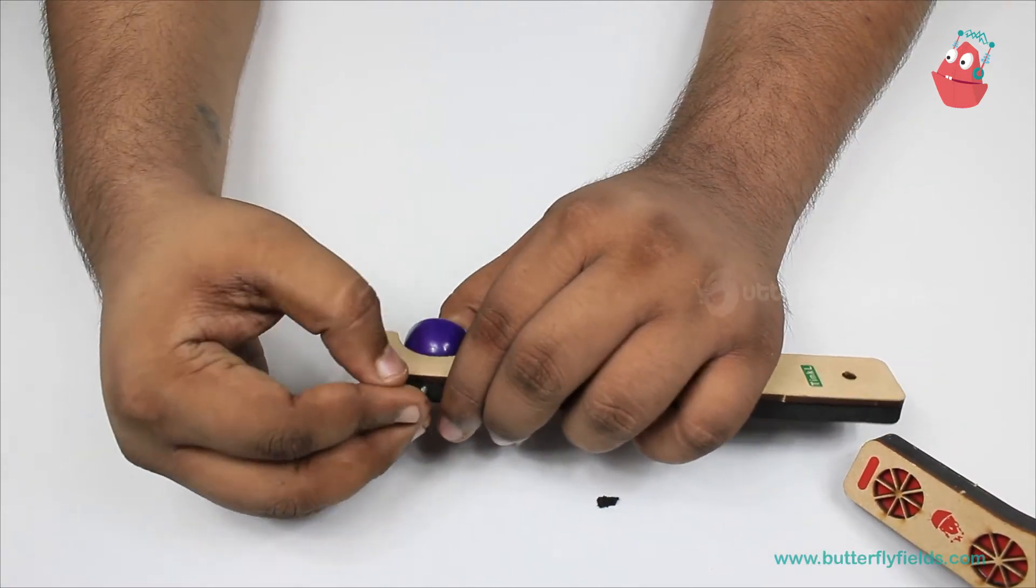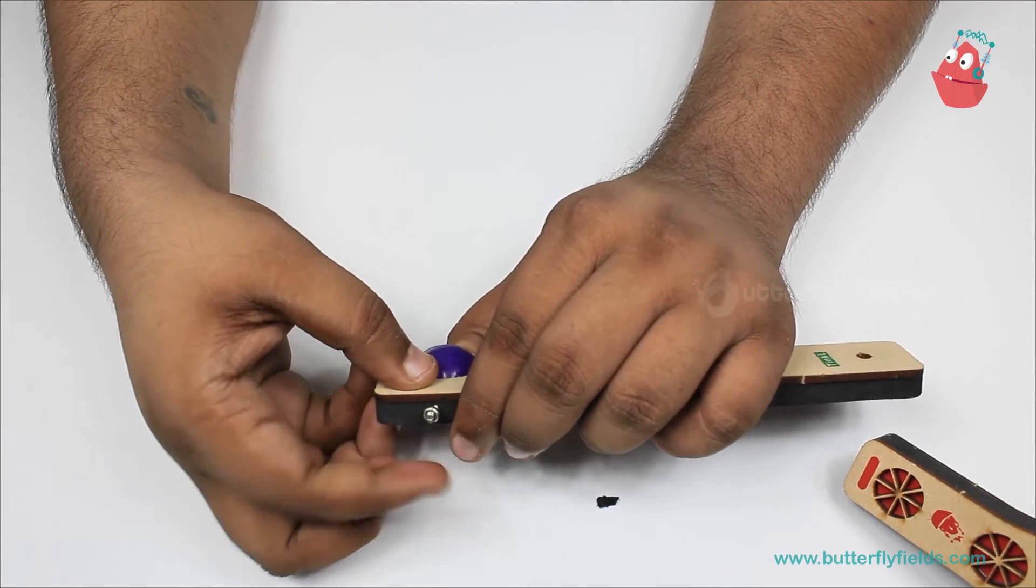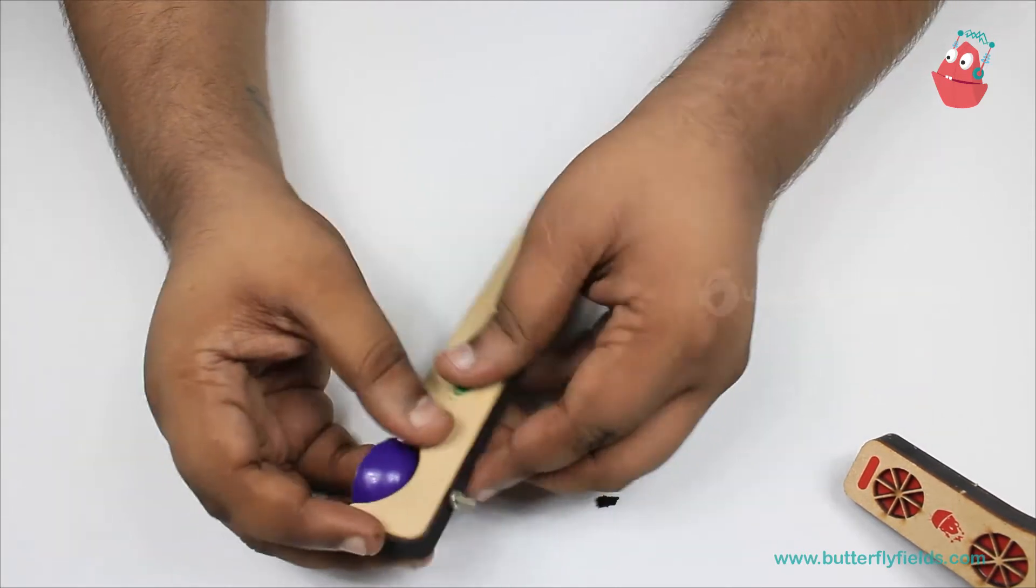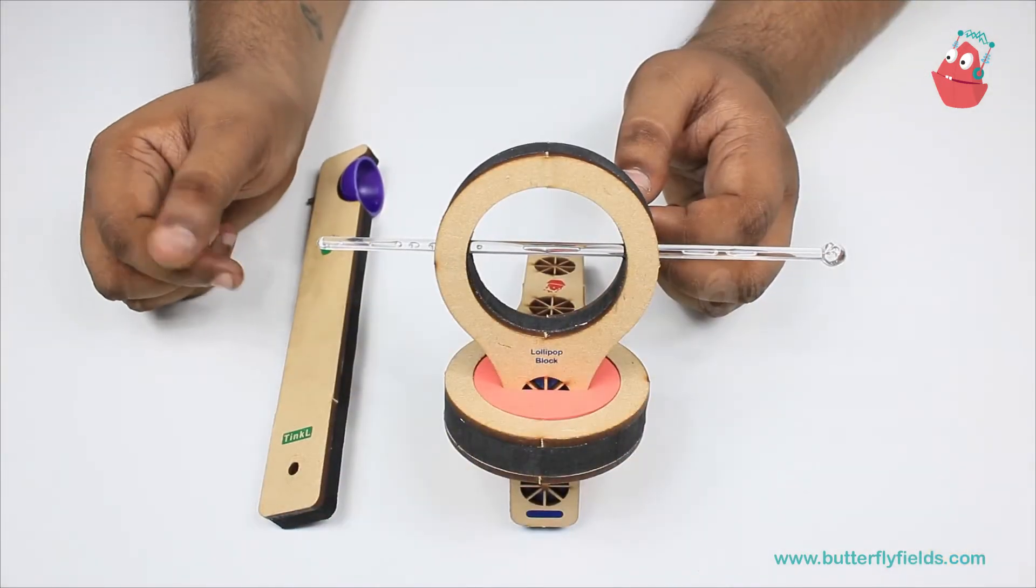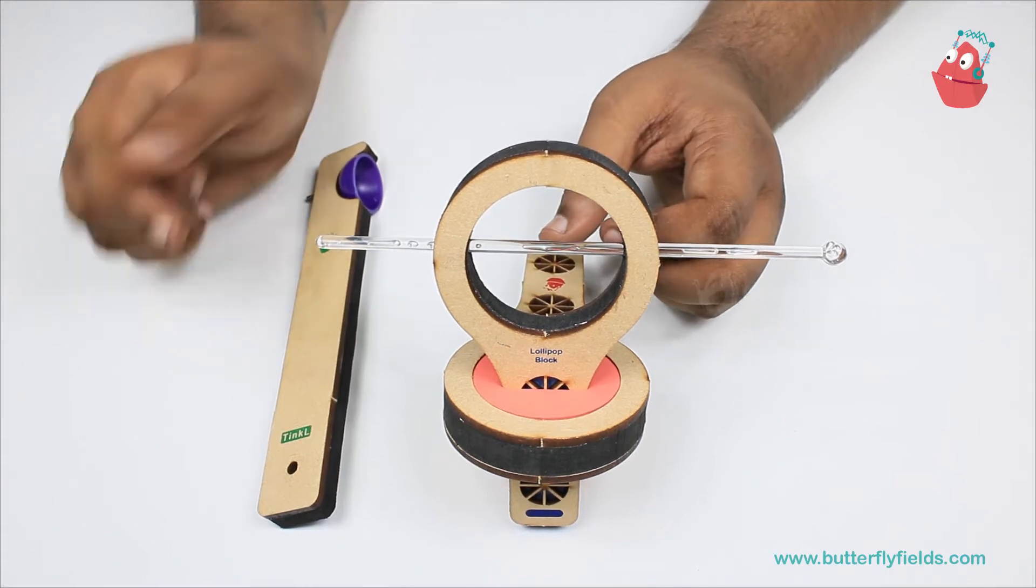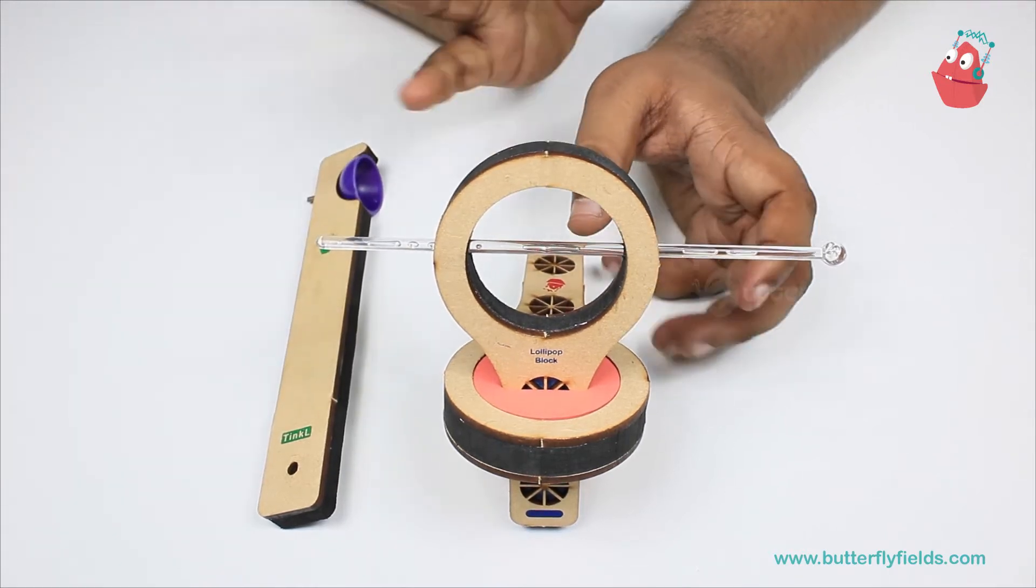The next step is to fix this catapult hand onto this lollipop block.